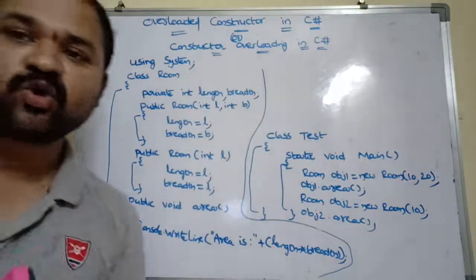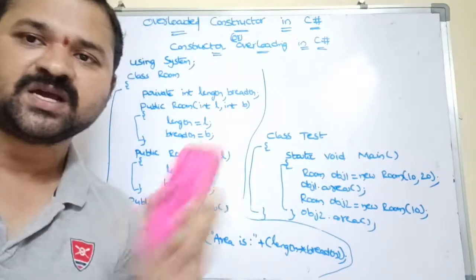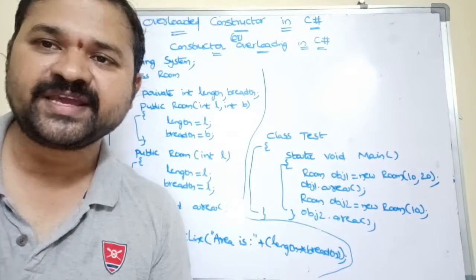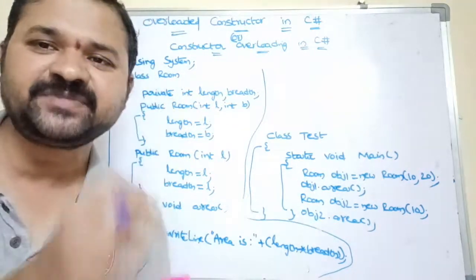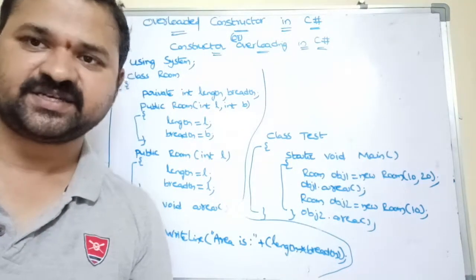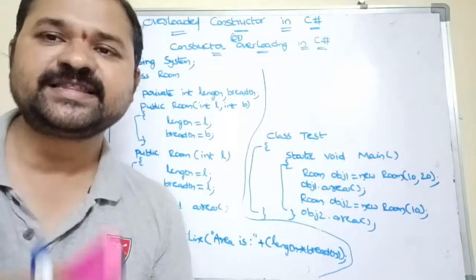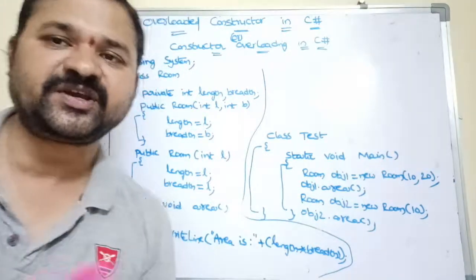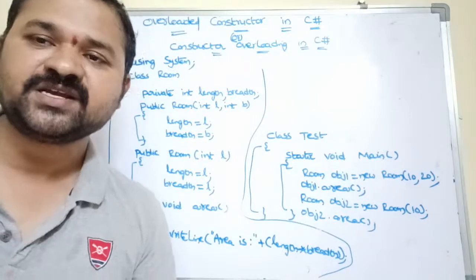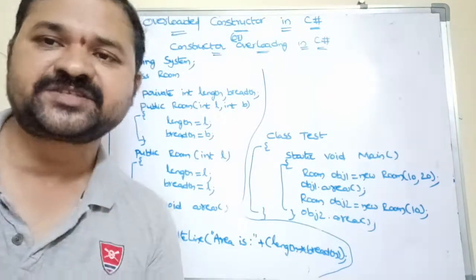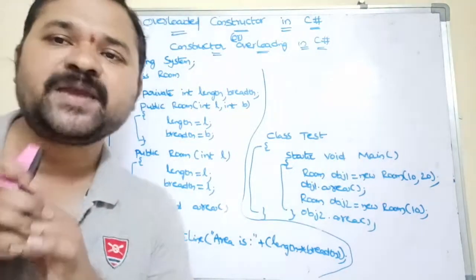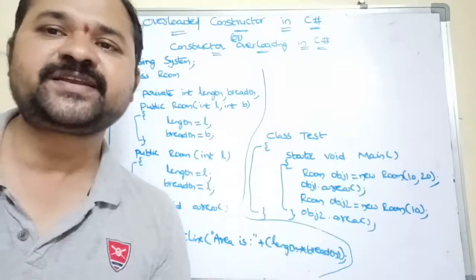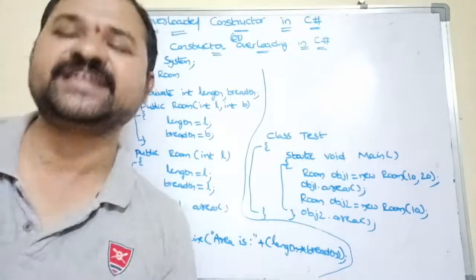Let's see about overloaded constructors in C#, also called constructor overloading. We know that overloading means using the same thing for different purposes. Method overloading means using the same method for different purposes by providing different number of arguments. Likewise, constructor overloading means using the same constructor for different purposes by providing different number of arguments — that is, with different signatures.